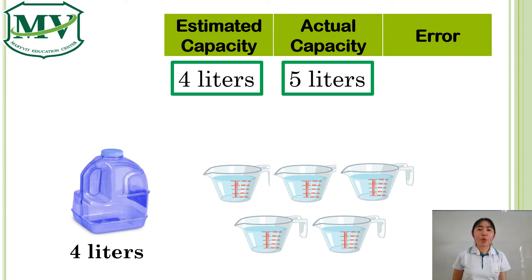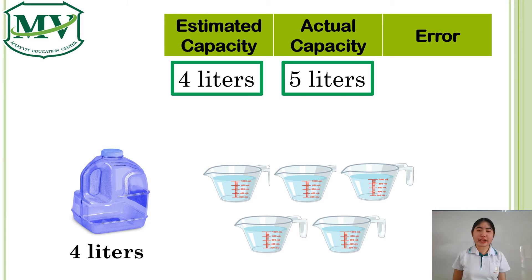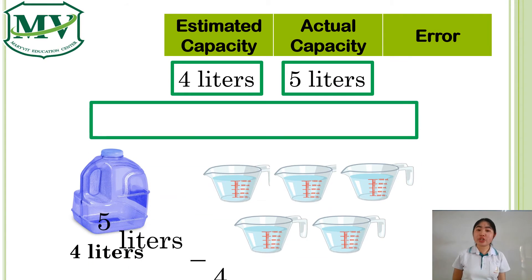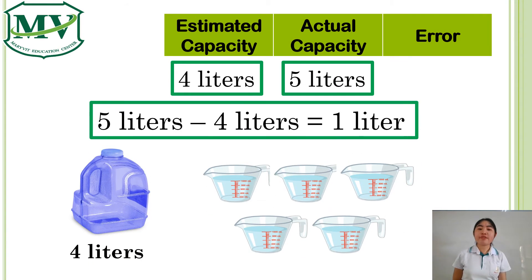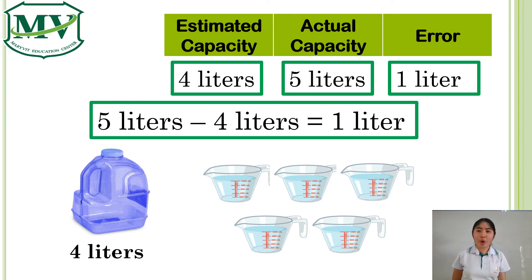Now, the error is the difference between our estimated capacity and our actual capacity, which is 5 liters minus 4 liters, equal to 1 liter.